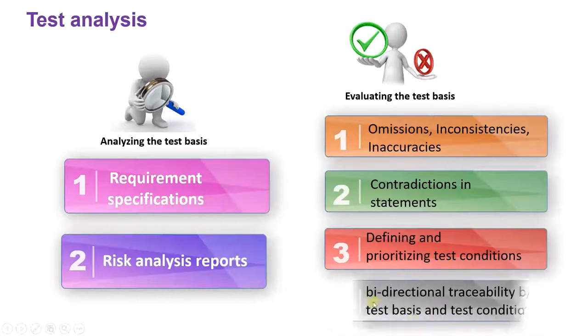The final point is bi-directional traceability between test basis and test conditions. We have the requirement, and that has to be mapped with our test conditions. This way, if the customer asks where is the test condition for this particular requirement, we can show them by using this traceability.